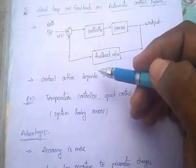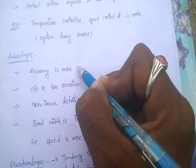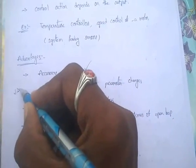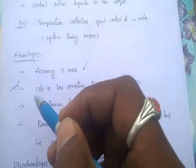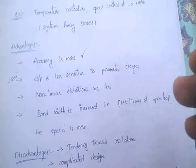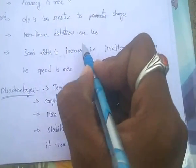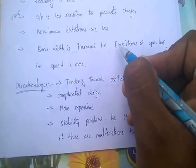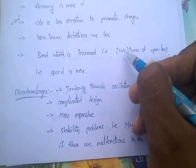Main advantages of closed loop control systems: accuracy is very high, and they are less sensitive to parameter changes. Non-linear distortions are very less. Another major advantage is that bandwidth is increased — meaning speed is also very high, making them faster systems. The bandwidth of a closed loop control system is (1+K) times that of the open loop control system.